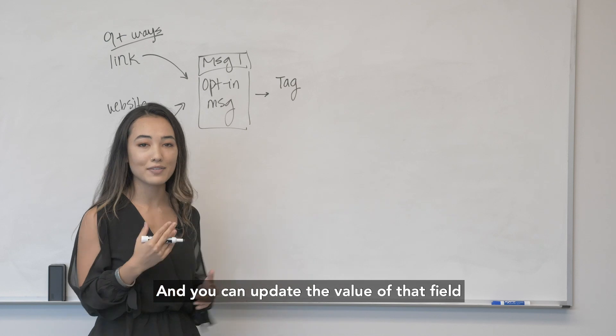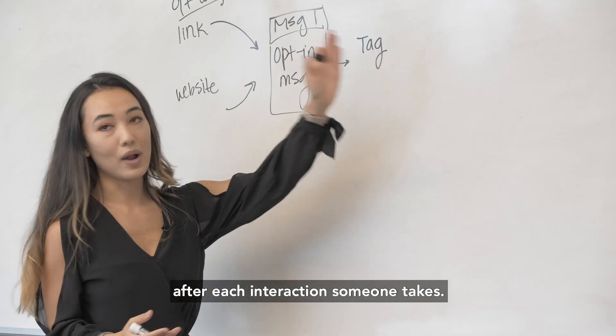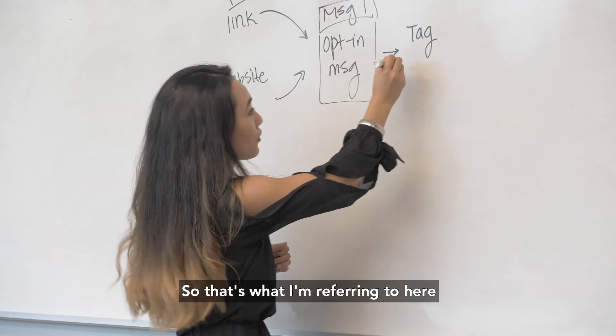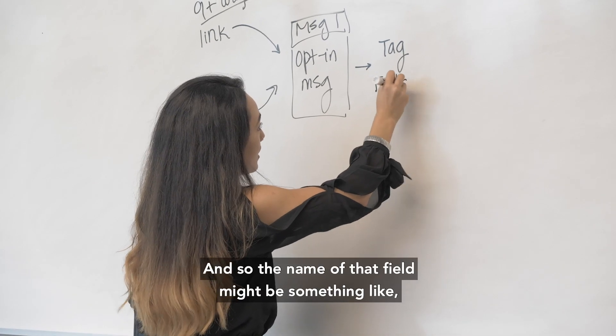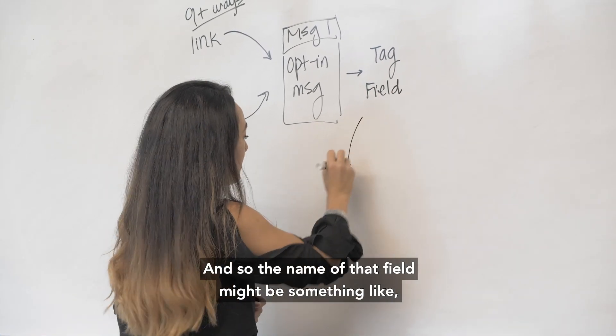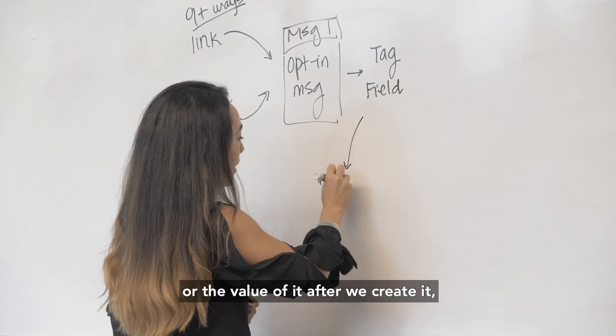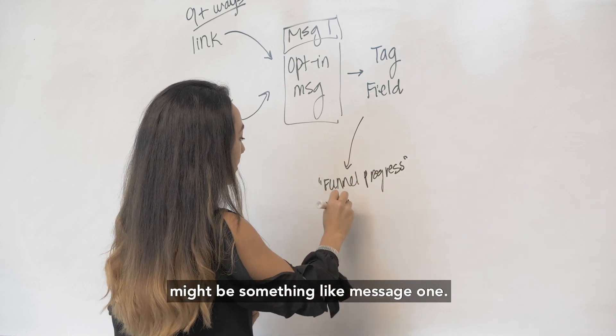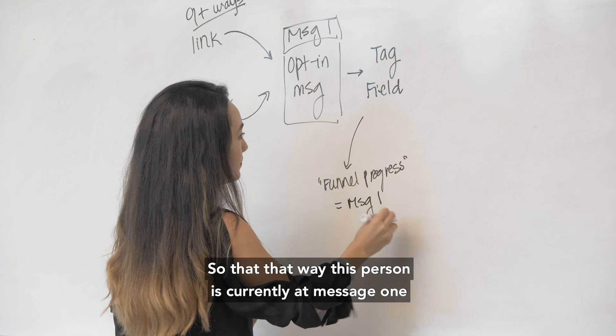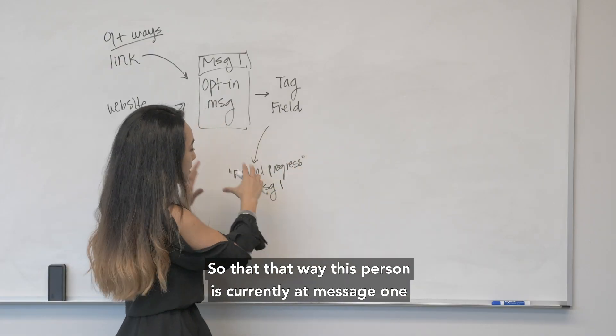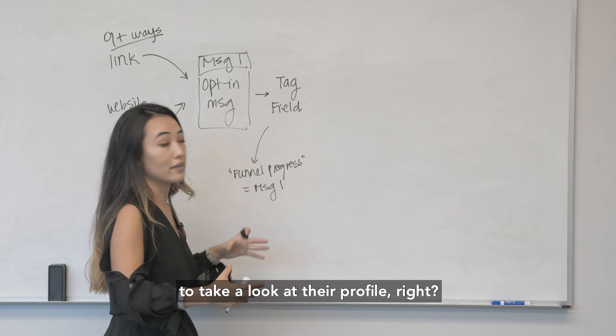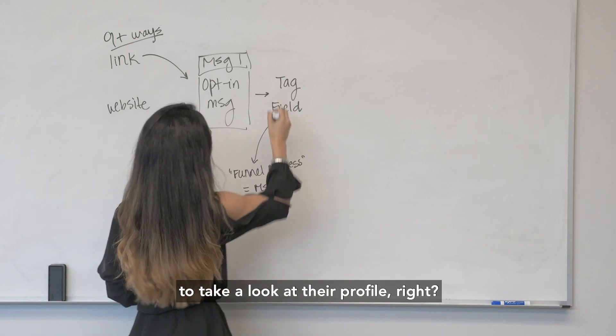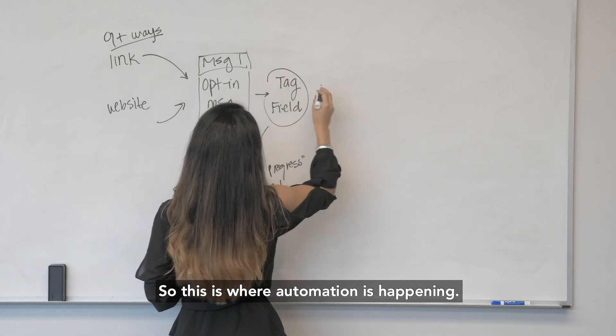So that's what I'm referring to here when I say field. The value of it after we create it might be something like message one. So that way I just know this person is currently at message one at any given point if I were to take a look at their profile. This is where automation is happening.